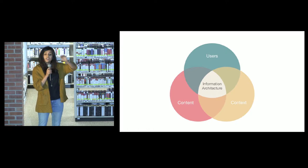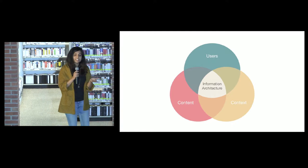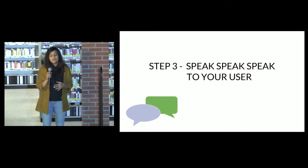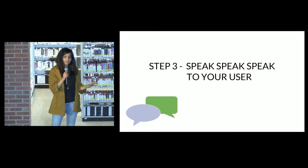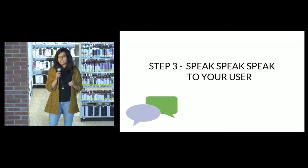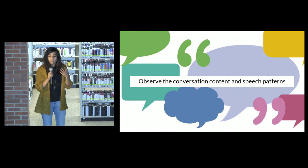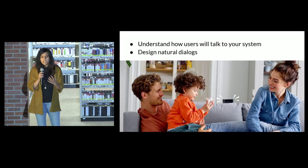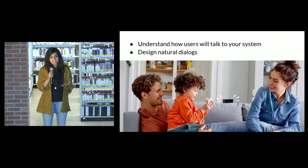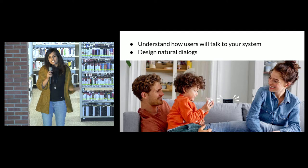This will help you crystallize where your user is flowing and at what points they need support. Which brings me to the next step: speak, speak, and speak to your user. Humans are a really talkative species, but we don't write the same way that we speak. So go out in the real world and examine how people are talking. Look for two things: one, the content of their conversations — what are they saying, what responses are they expecting, how are conversations changing paths? And two, their speech patterns — do they pause after certain words, how long is too long a pause, are they using filler words? This gives you a rich data set to design natural conversation.